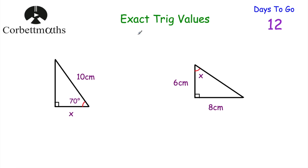Today we're going to be looking at exact trig values. Before we move on to exact trig values, I thought we'd just warm up by doing a few trigonometry questions. So here's two trigonometry questions. We've got a right angle triangle and I want you to find the length of this side, and here we've got another right angle triangle — can you find the size of this angle? So press pause now and work out the length of this side and then work out the size of this angle.